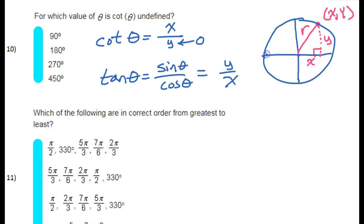Well, the y value is zero here and here. So which one of these represents one of these positions? This is 180 degrees. So the y value will be zero right here, and therefore cotangent will be undefined. So the answer is 180 degrees.